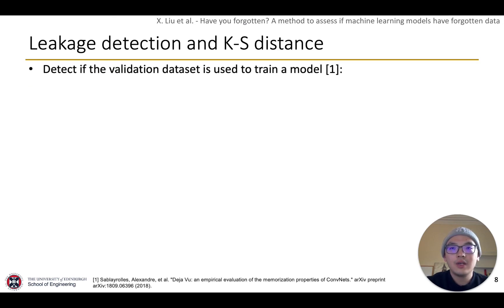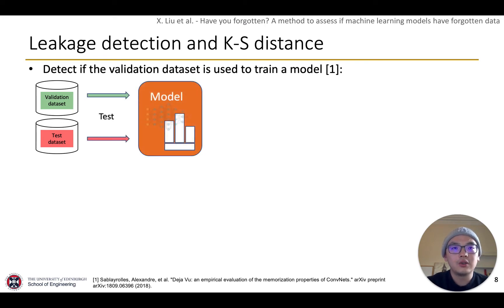The other related work is leakage detection. For example, detect if the validation dataset is used to train a model in challenge competitions. Testing the validation and test dataset with the model, two confidence distributions can be obtained. The details will be covered later.